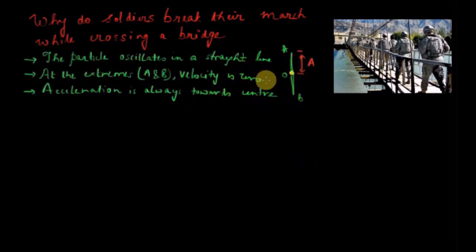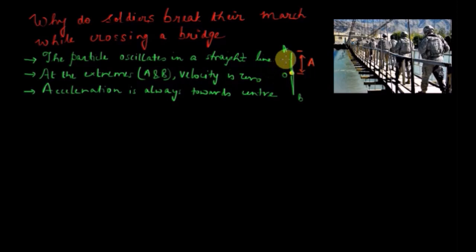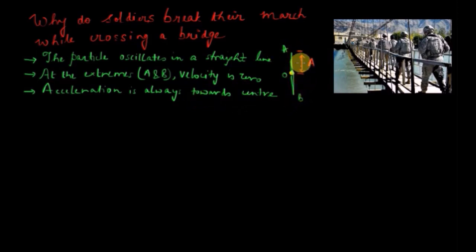Now we make the following observations from the motion of the particle. Number one: the particle oscillates in a straight line. Number two: at the extremes, the velocity of the particle is zero. Since at the extremes the velocity is zero, the particle always accelerates towards its center. And lastly, the maximum distance the particle goes from the center is denoted by A in this diagram.